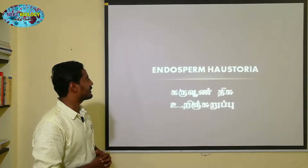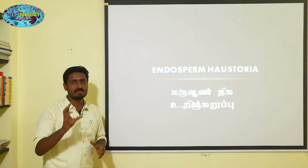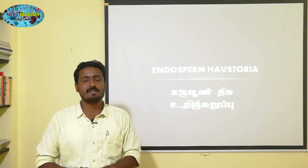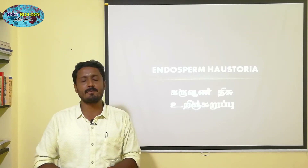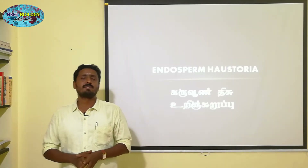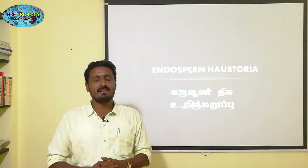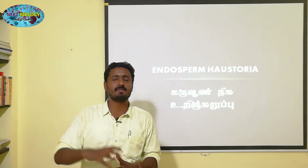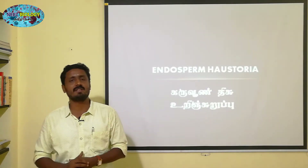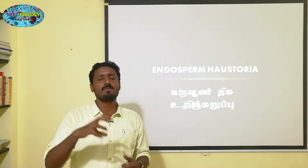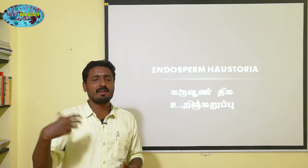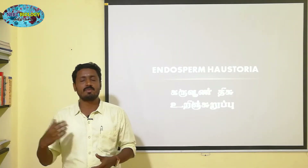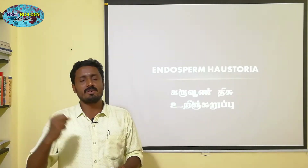Now let's go to the topic: Endosperm Haustoria. There are haustoria which would be found in the movements of the organ. We'll see the nature of these branches. It can be found in the shape. We can find a position in the structure and find the haustoria in the wall.